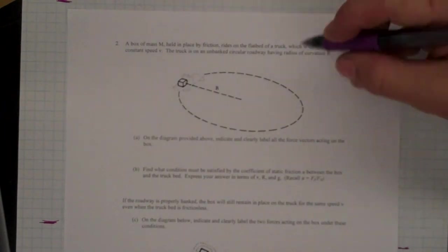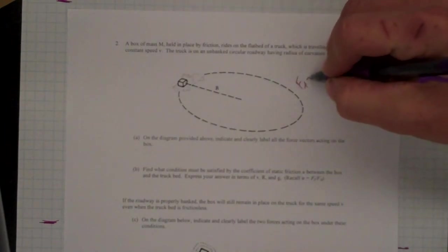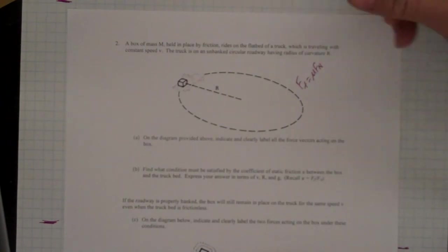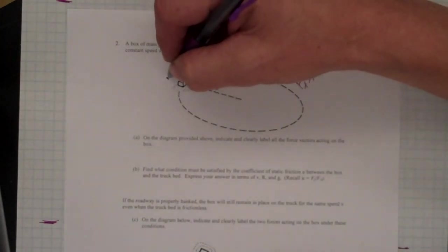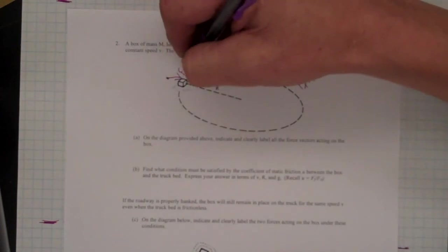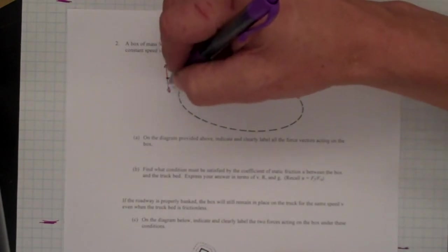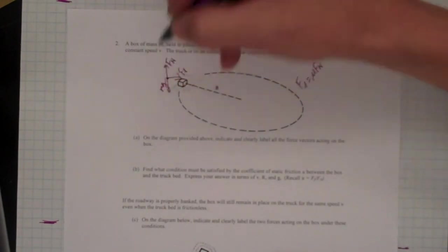You'll recall that the force of friction is equal to mu times the normal force. So if I do a free body diagram, I have the force of friction inward, I have a normal force up, and I have Mg force downward.